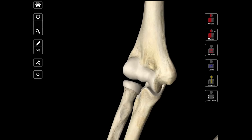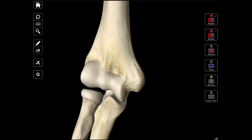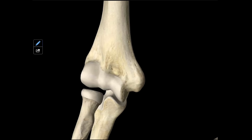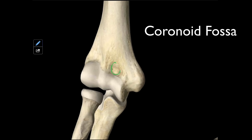Then on the anterior surface, we have a little fossa. Anytime you hear 'fossa,' it comes from the Latin word that means a ditch. On the anterior aspect, we have our coronoid fossa, which is this structure right here. We call it the coronoid fossa because right here on the ulna, we have a structure called the coronoid process. And when you flex your elbow, that coronoid process is going to go around the trochlea and fit right here into the coronoid fossa.